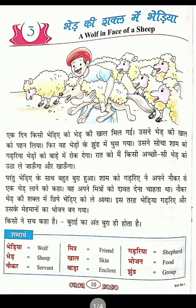The glossary words are: wolf — w-o-l-f; sheep — s-h-e-e-p; servant — s-e-r-v-a-n-t; friend — f-r-i-e-n-d; skin — s-k-i-n; enclosed — e-n-c-l-o-s-e-d; shepherd — s-h-e-p-h-e-r-d; food — f-o-o-d; group — g-r-o-u-p.